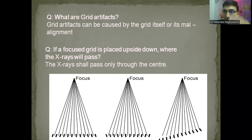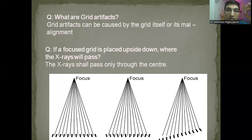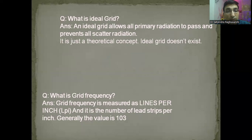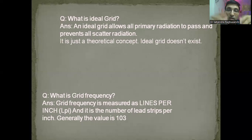The examiner might ask: if a focused grid is placed upside down, what will happen? In that case, the x-rays will pass only through the center; the image will be formed only centrally and in the periphery there will be grid cutoff. What is an ideal grid? An ideal grid allows all primary radiation to pass and prevents all scatter radiation. But in practice this doesn't happen — a grid generally prevents some primary radiation, and some scatter radiation still reaches the film.